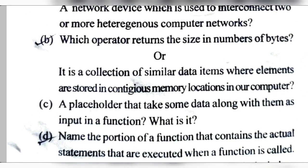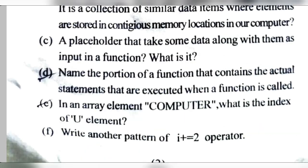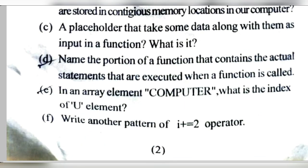Number B — Which operator returns the size in number of bytes? Number C — An array is a collection of similar data items where elements are stored in contiguous memory locations. Number D — A placeholder that takes some data along with it as input in a function — the answer involves parameters and arguments.